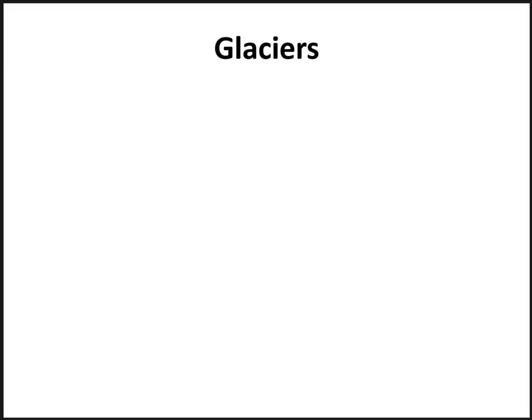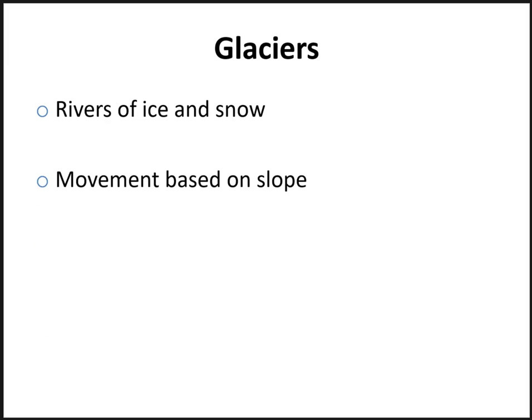Glaciers are a very unique feature on the Earth's surface. Geologists call them rivers of ice and snow, and they move very similar to how water would flow. The flow is based on the slope of the land — the steeper the slope, the faster the movement of ice and snow.